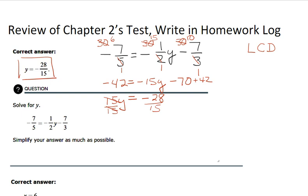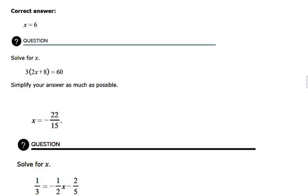Let's go on to the next one. We can use that same protocol for this one now. What we need to do is distribute, and we'll write it up here. 3 times 2x is 6x, 3 times 8 is 24, and that equals 60.